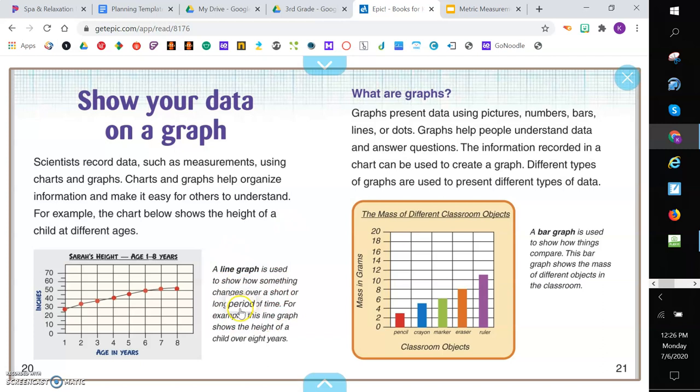So this line graph is used to show how something changes over a short or a long period of time. For example, this line graph shows the height of a child over eight years. So this is how Sarah has grown over those eight years.